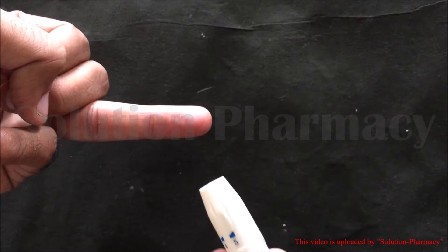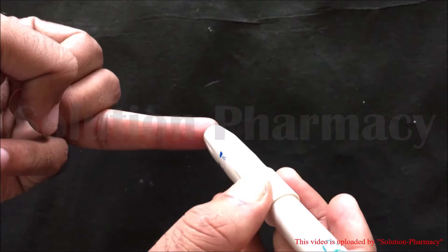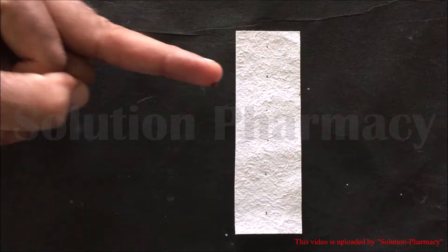Prick the fingertip. After pricking the fingertip, allow the blood to flow freely and then immediately start the stopwatch.